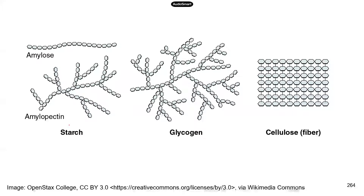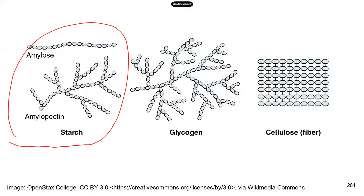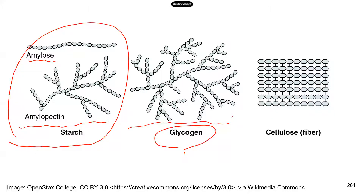Here is a diagram showing the structures of some common polysaccharides. Starch has two components: amylose — remember, amylose is broken down by amylase in our mouth — and amylopectin, which has a branched structure. The second polysaccharide shown is glycogen. One thing to note is that some polysaccharides have a linear structure, like amylose or cellulose, while others are branched, like amylopectin and glycogen.